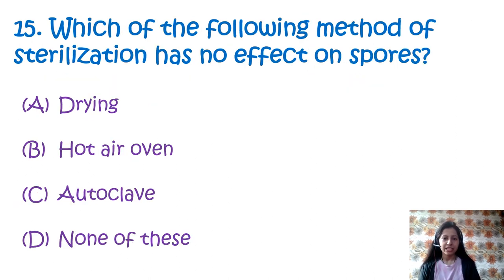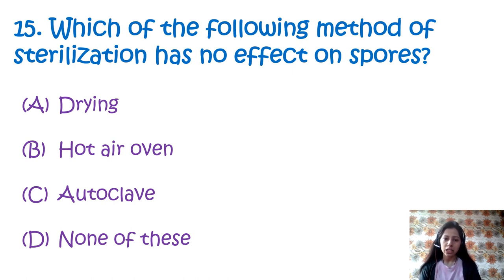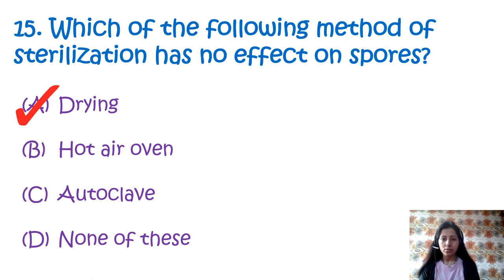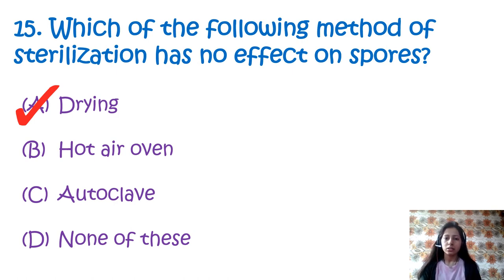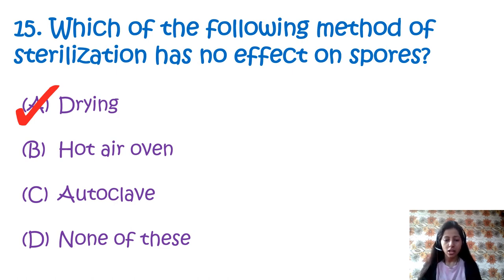Question 15: Which of the following methods of sterilization has no effect on spores? Option A: drying, option B: hot air oven, option C: autoclave, option D: none of these. The correct option is A, drying. Drying is a method of sterilization in which microorganisms are removed by applying moisture-free heat. It is based on the principle of conduction, where heat is absorbed by the outer surface of the object and then passed to the next layer.